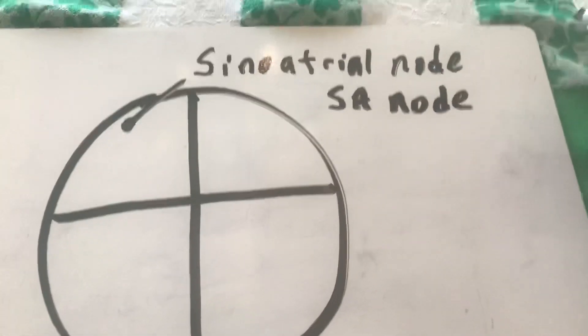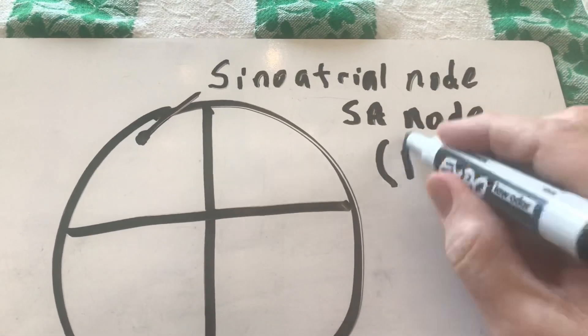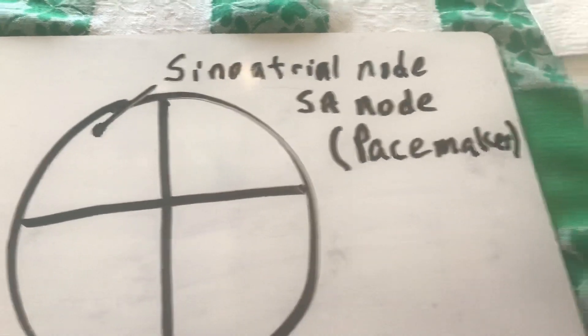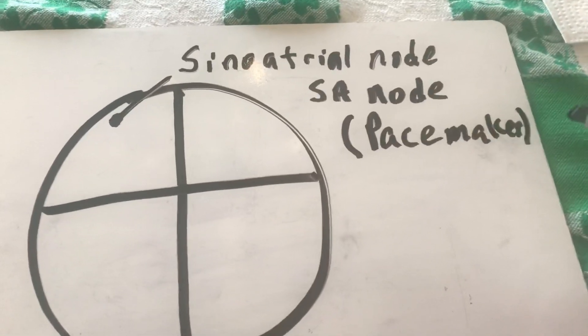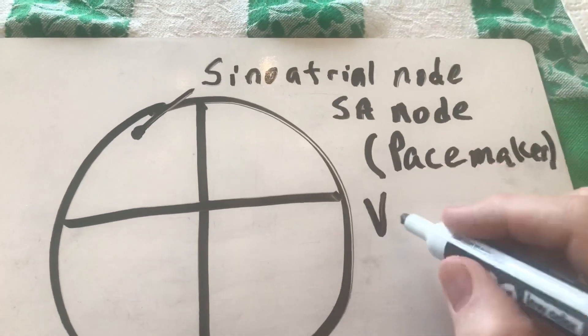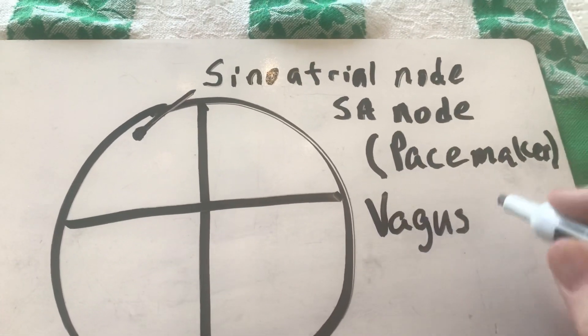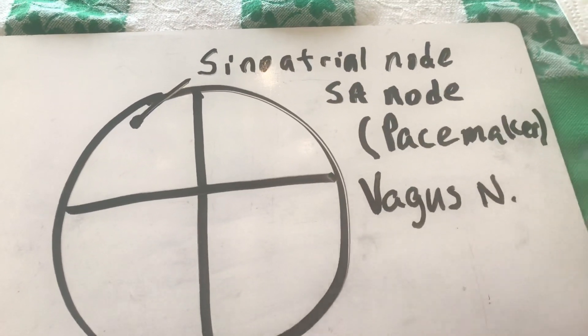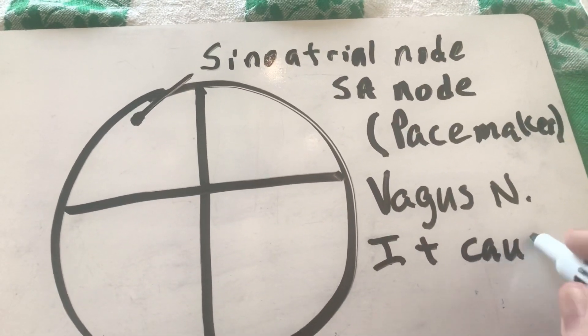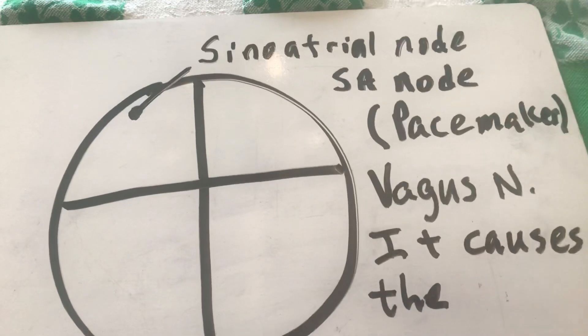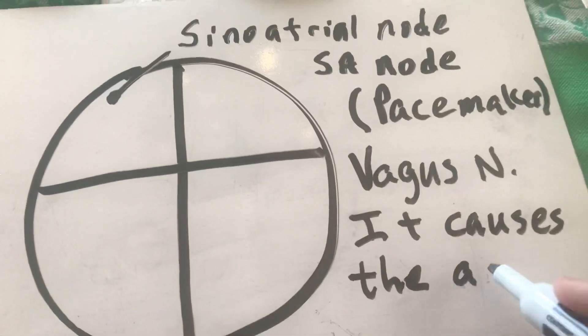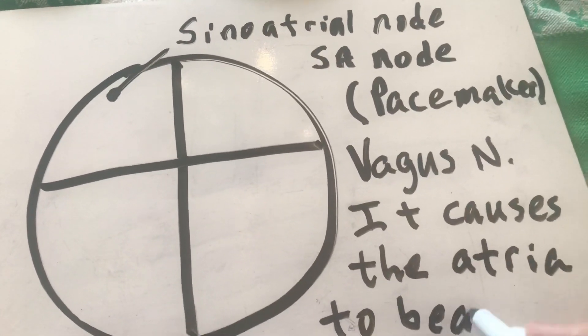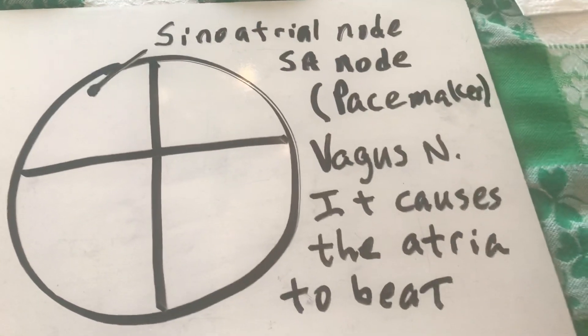Also known as the SA node, it's also known as the pacemaker of the heart. If you remember the cranial nerves, it gets signals from the vagus nerve that will basically tell it how fast it can beat. So what it does is it causes the atria, remember atria is plural for atrium, to beat. That's what the SA node does.